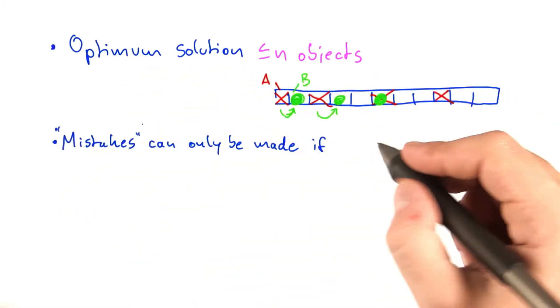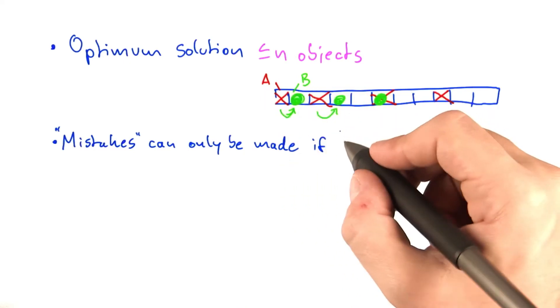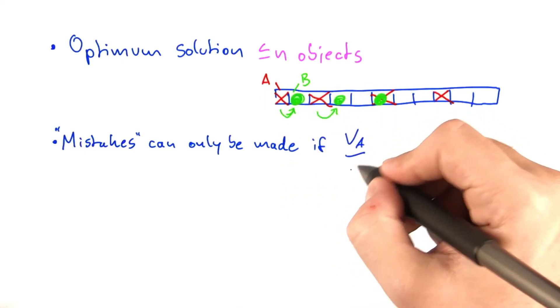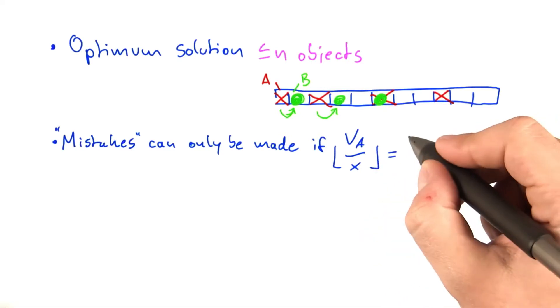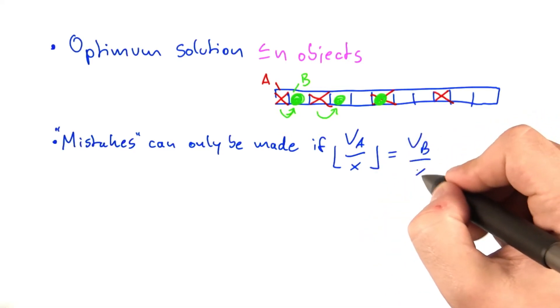So we know that these kind of mistakes can only be made if the value of a divided by x, rounded down, is the same as the value of b divided by x, rounded down.